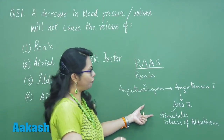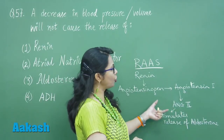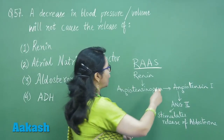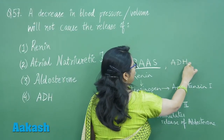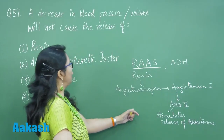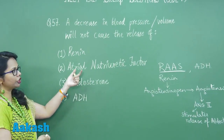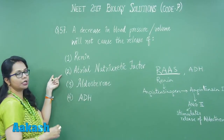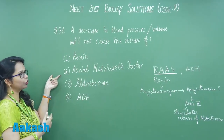Along with RAS, there is release of ADH as well, which is also stimulating the reabsorption of water. So RAS and ADH are working synergistically, while aldosterone is part of that RAS, while ANF is totally antagonistic to these two.